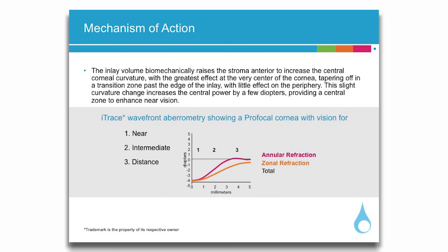This graph also reveals how important pupil size is. It is recommended that the photopic pupil size be greater than 3 millimeters in diameter in order to provide optimal uncorrected distance vision.